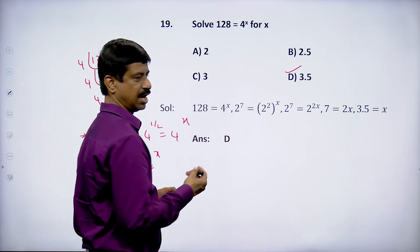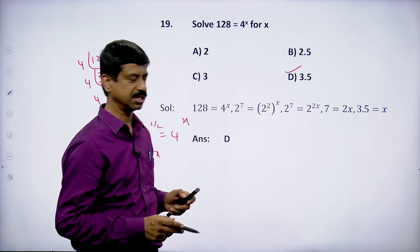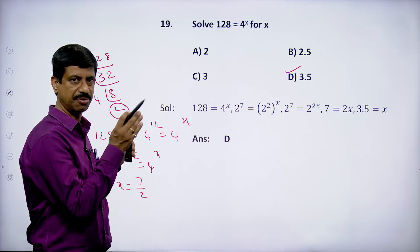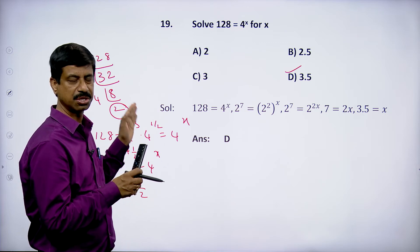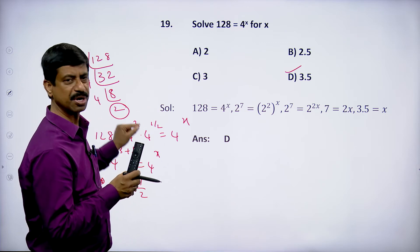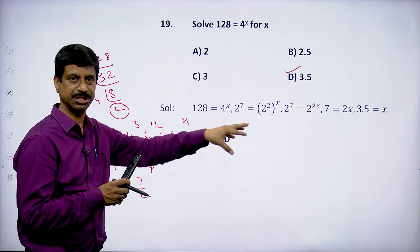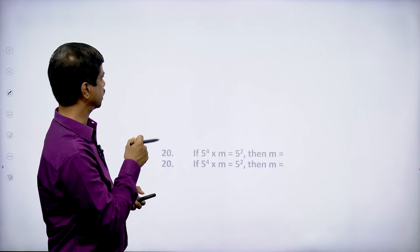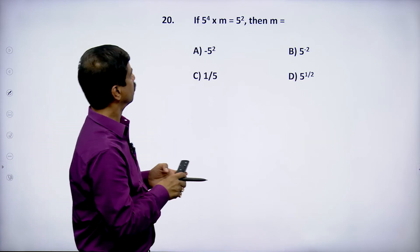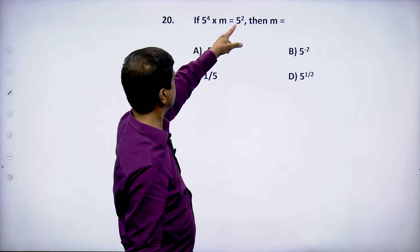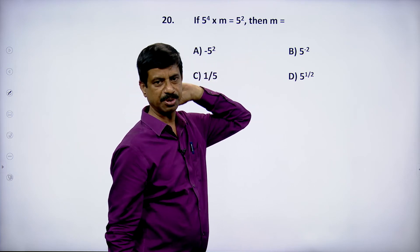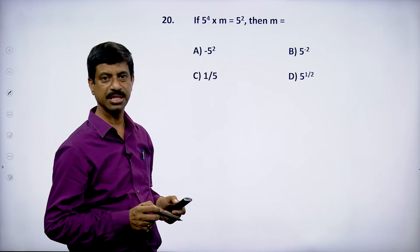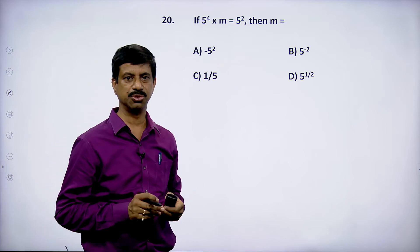Let us continue. The next few questions require a little thinking. For the question: 5^4 · m = 5², this is simple homework — please note it. We will not solve it here.